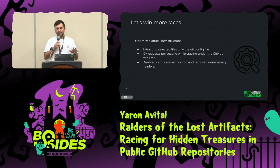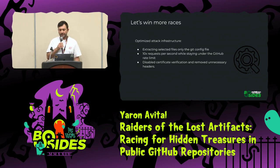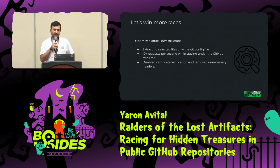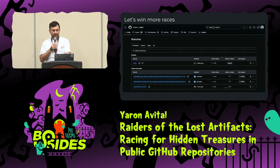That was cool, but I wanted to win more and more races. Sometimes I lost, depending on how large the artifact was. So I did some optimization and tweaks, like extracting only the files I needed because artifacts were compressed, sending a lot of requests per second to identify exactly when the artifact is available — that was crucial — and some communication tweaks like disabling certificate verification and removing unnecessary headers.